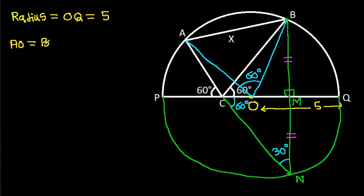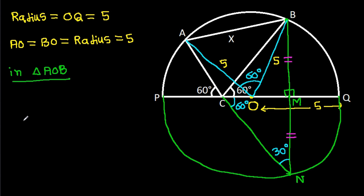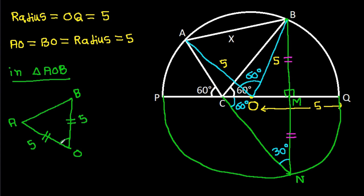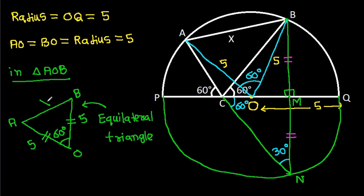So AO equals BO equals 5. In triangle AOB, we have AO equal to BO equal to 5, and the angle AOB is 60 degrees. That means triangle AOB is an equilateral triangle, and we have AB is X.